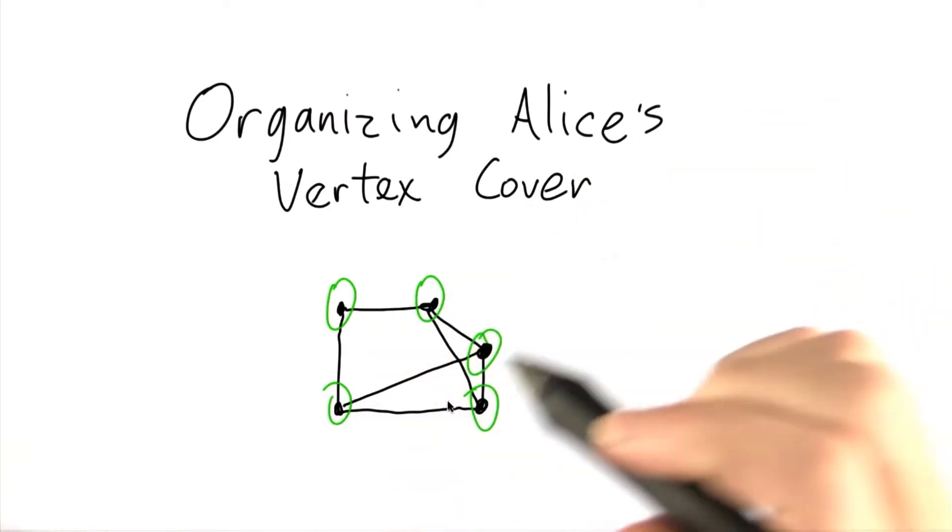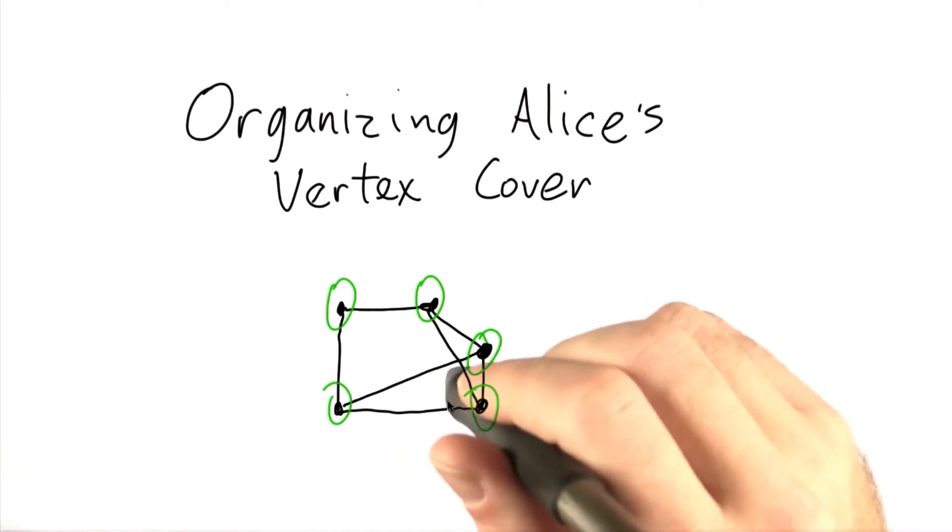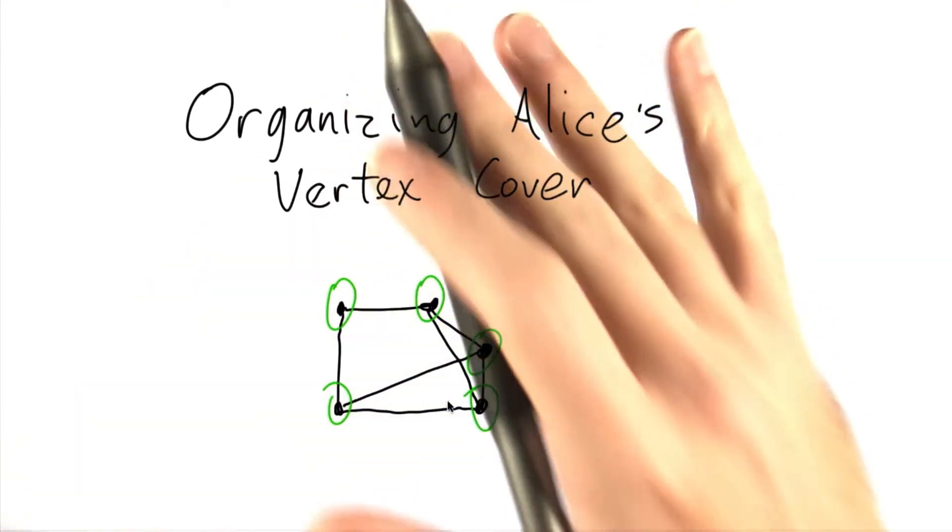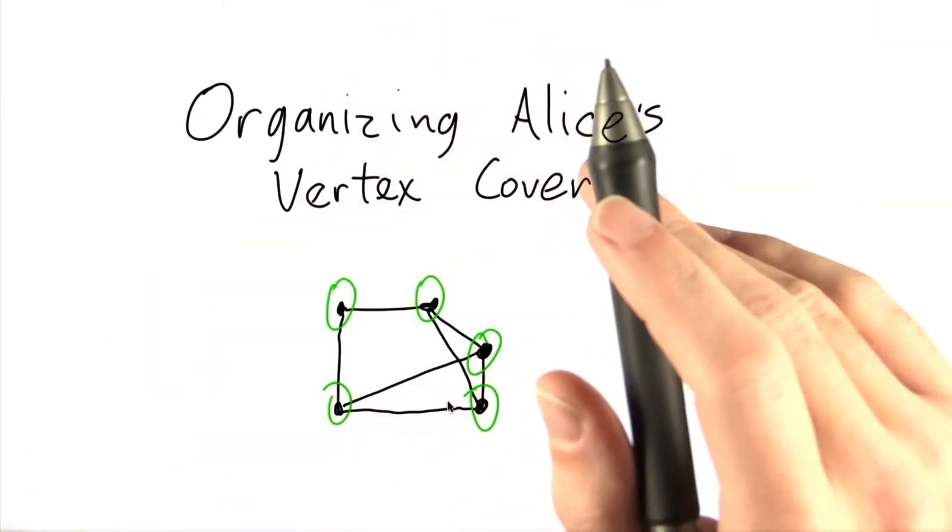The point is that we're not specifying an order to check the vertices in. We're just saying check every single one. What if we did though?